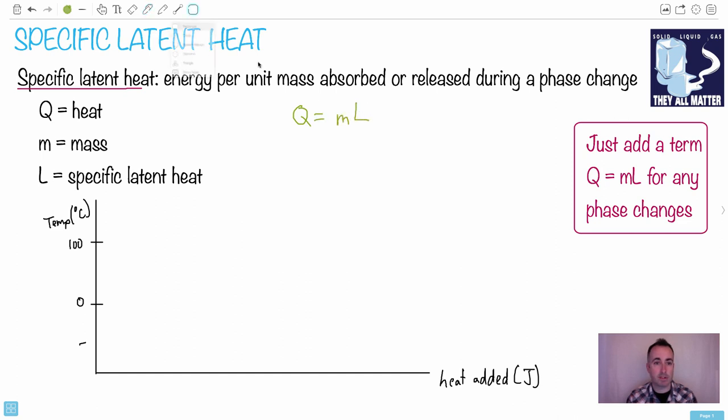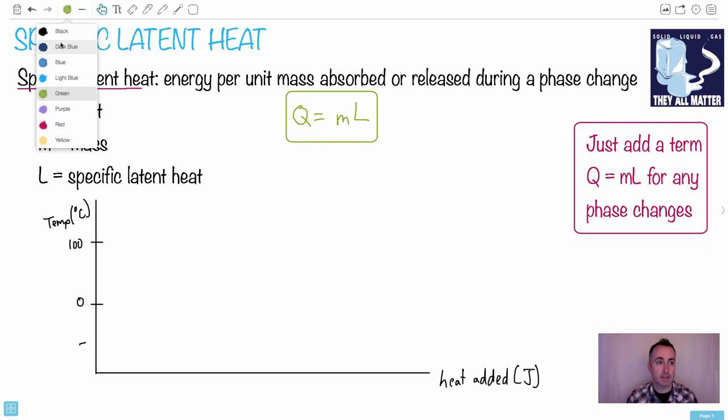Just like for specific heat capacity we had Q equals MC delta T, here we have Q equals ML. Where Q is the heat - remember that's just the energy, so that's measured in joules. M is the mass, measured in kilograms.